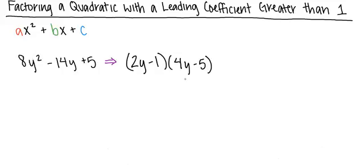we'll multiply 2y times 4y to get 8y squared, then multiply 2y times negative 5 to get negative 10y. Next, we'll multiply negative 1 times 4y to get negative 4y, and finally multiply negative 1 times negative 5 to get positive 5.